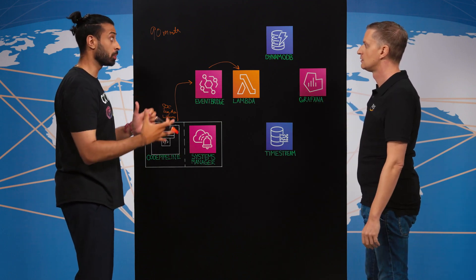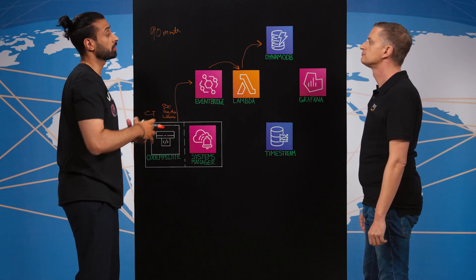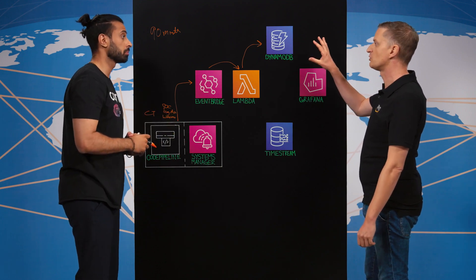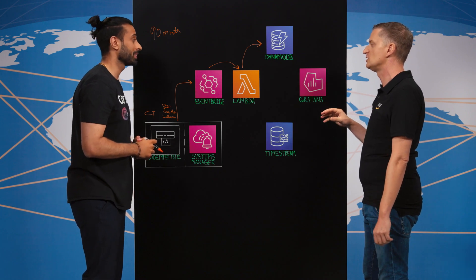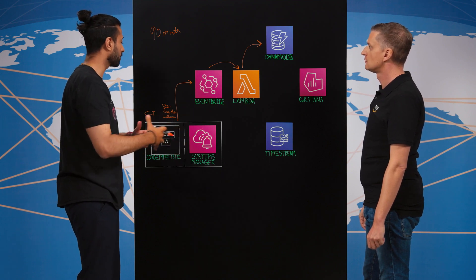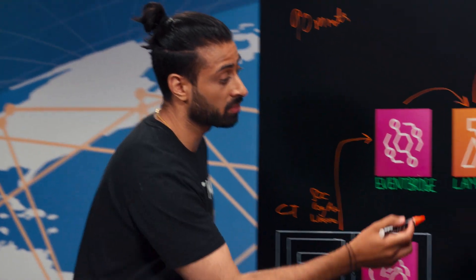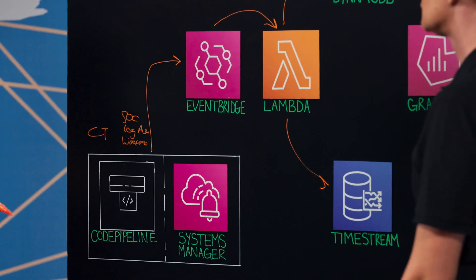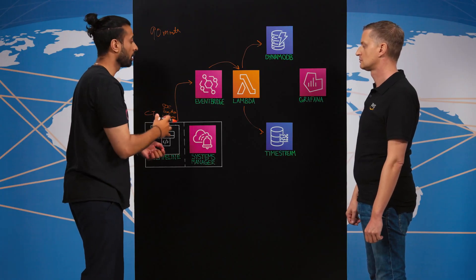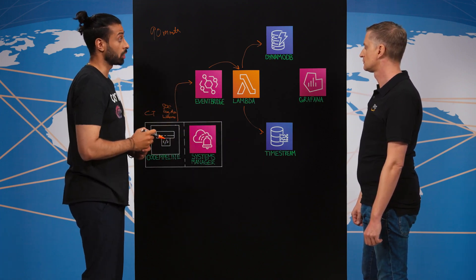We store the data in two places. The first is DynamoDB, so we have the raw historical data available in one central location for future access. We also take advantage of Timestream, which is a great way to measure time series data. When a CodePipeline kicks off and again when it finishes, we can aggregate that data in one central location in Timestream.